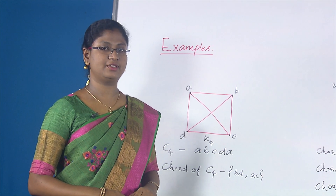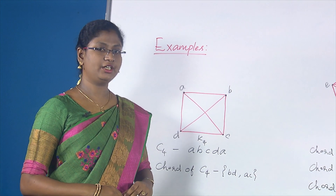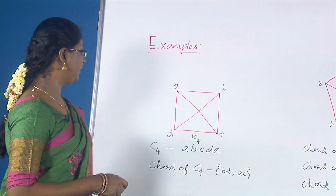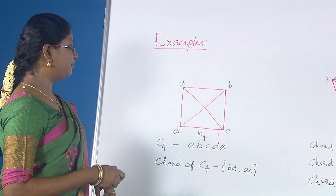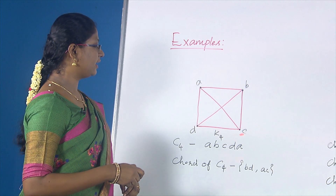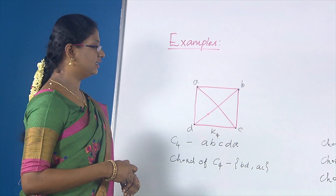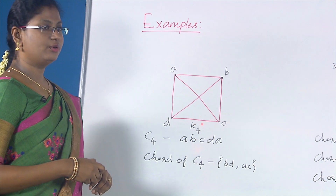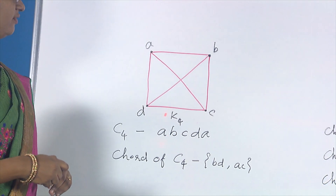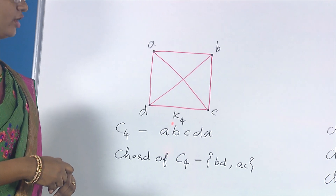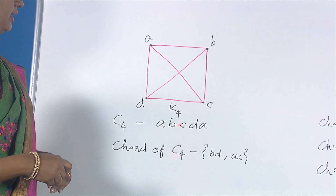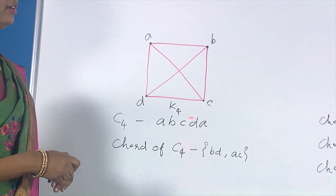Let us see some examples of chordal graphs. Every complete graph is a chordal graph. Here I have K4, a complete graph on 4 vertices A, B, C, D, where every vertex is adjacent to each other. For a chordal graph, every cycle of length at least 4 should have a chord. I am going to consider the cycle A, B, C, D, A, which is of length 4.